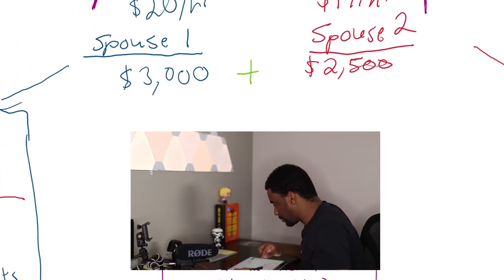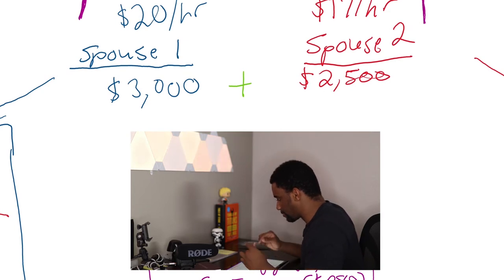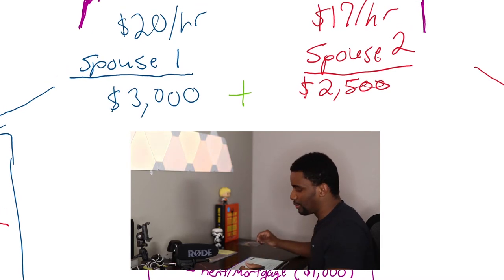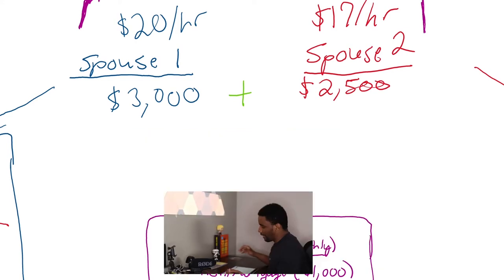All right, so we're moving up top. Let's say spouse number one makes $20 an hour and spouse number two makes $17 an hour. And that means just very rough, spouse one is going to bring home about $3,000 a month and spouse two is going to bring home about $2,500 a month.